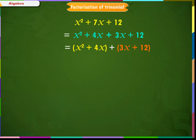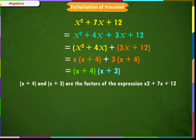Next, we take common factors out in both these terms: x(x + 4) + 3(x + 4). (x + 4)(x + 3). So, (x + 4) and (x + 3) are the factors of the expression x² + 7x + 12. This way of factorization is called splitting the middle term.